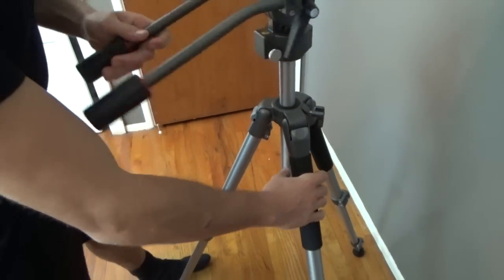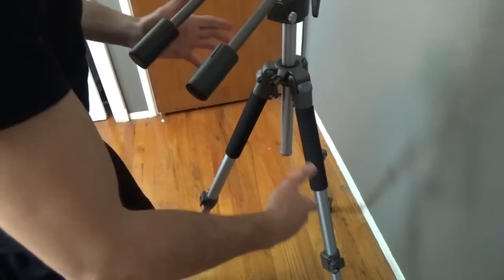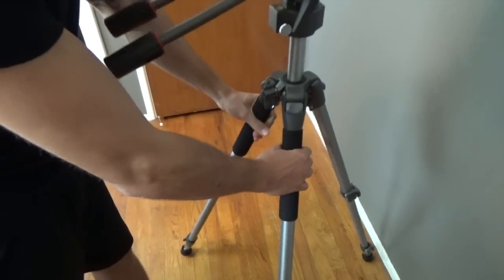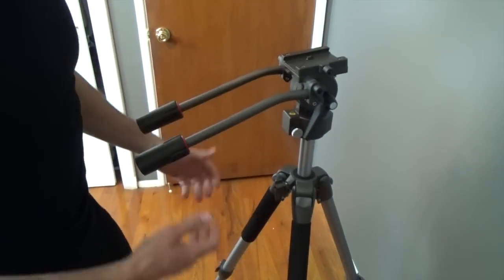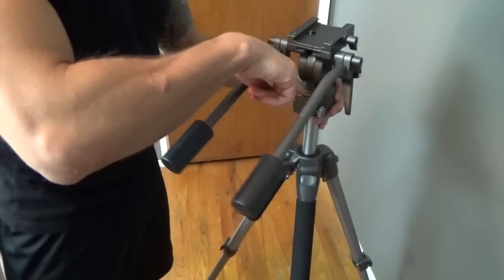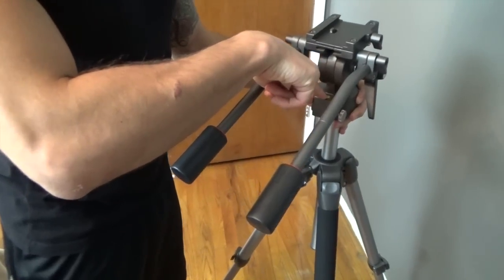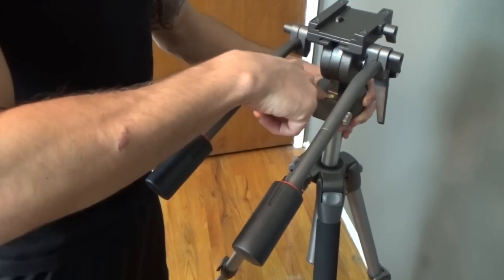When you're going to move this thing around, you've got the two pads on this side. I don't know how much they're really going to help you, but I guess they can help your hands from slipping up on this. You also do have a little bubble level on here as well, which is kind of nice to have.